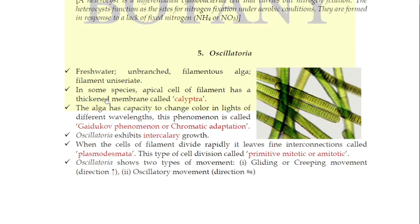In some species of Oscillatoria, there is also polarity — there is an apical cell on one side and a basal cell on the other. On the apical cell, a thickened membrane is found which is called the calyptra. So if a question is asked about where calyptra is found, you should answer: in the apical cell of Oscillatoria.